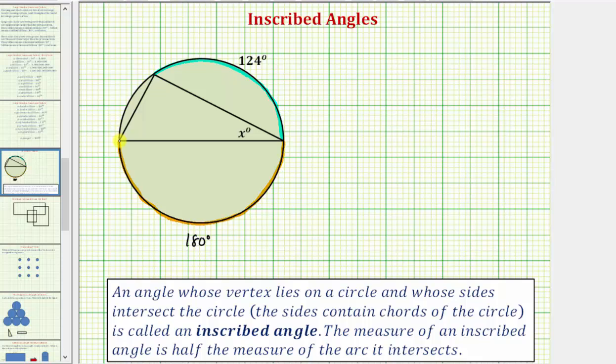Which means the remaining arc, this arc here, would have to measure 180 degrees minus 124 degrees or 56 degrees.